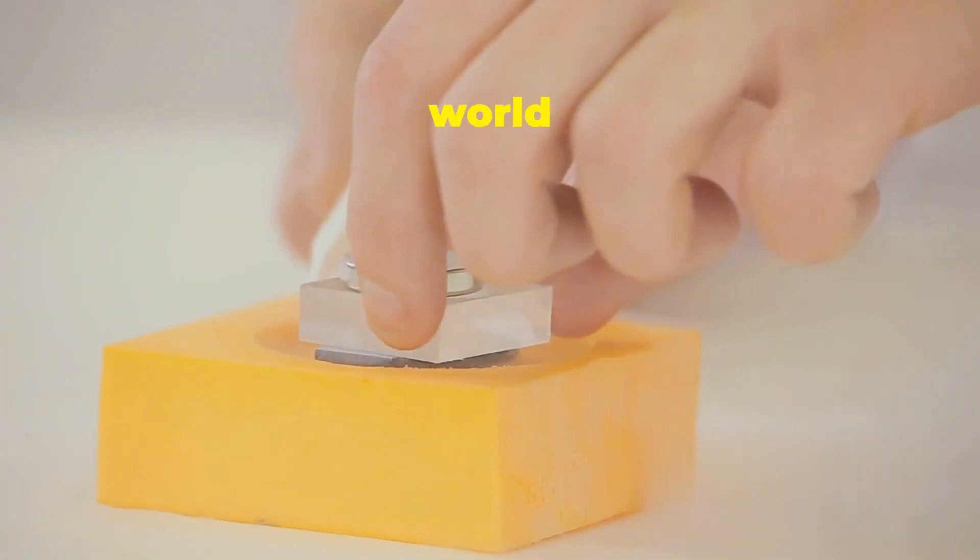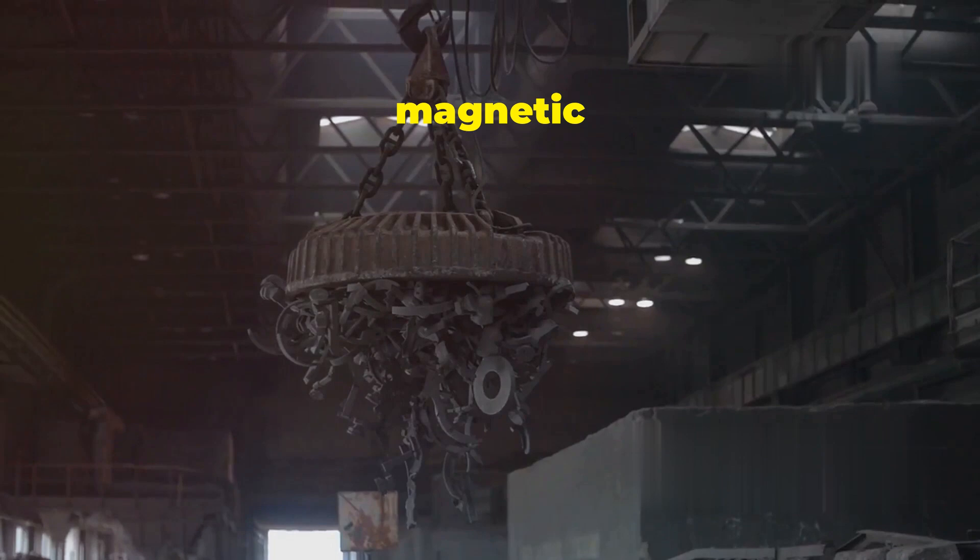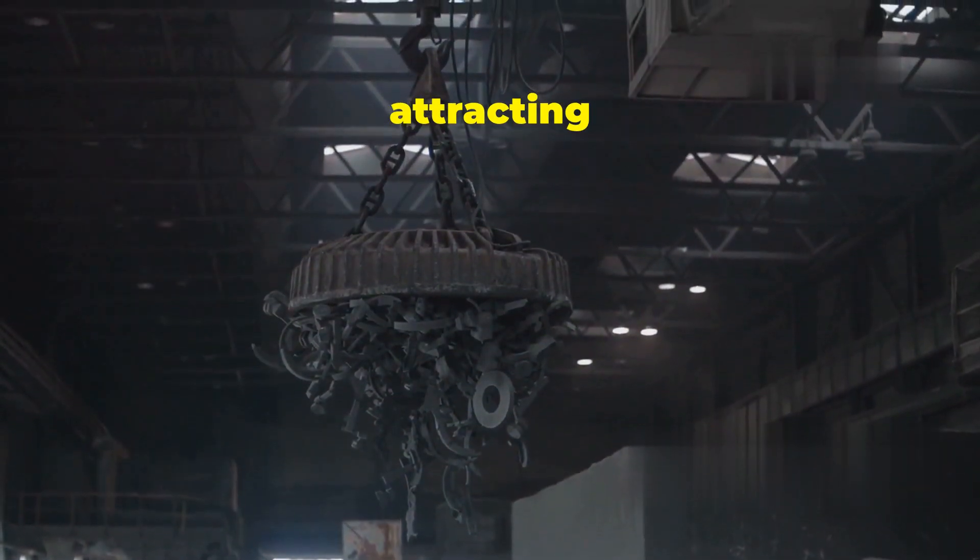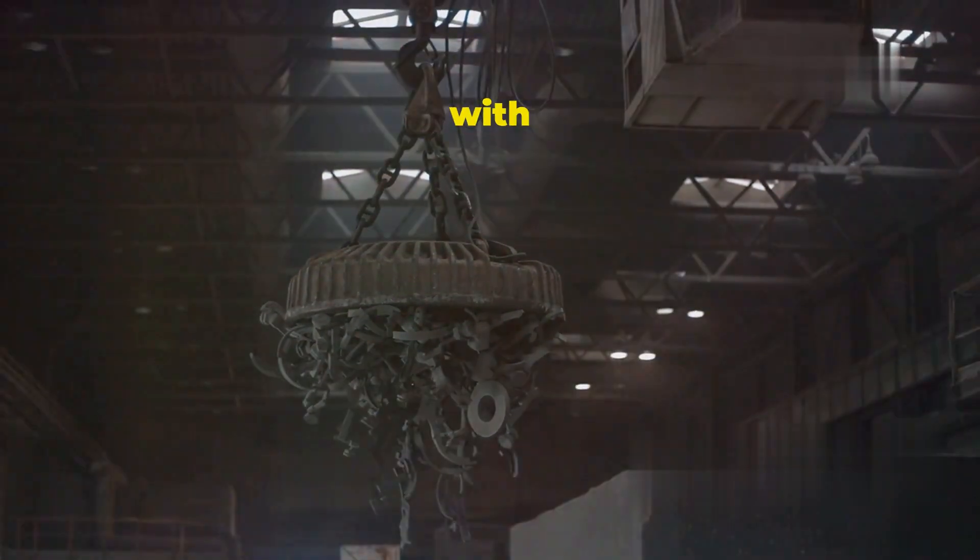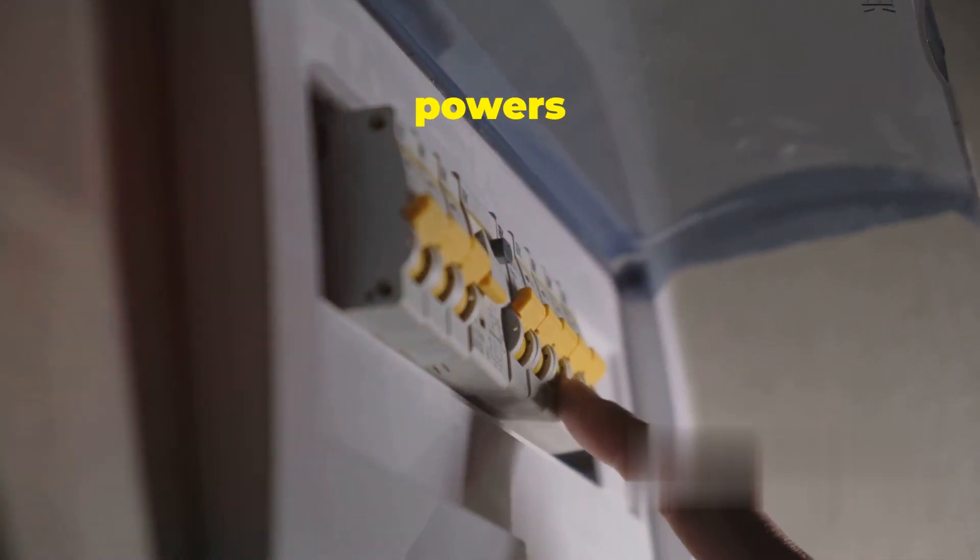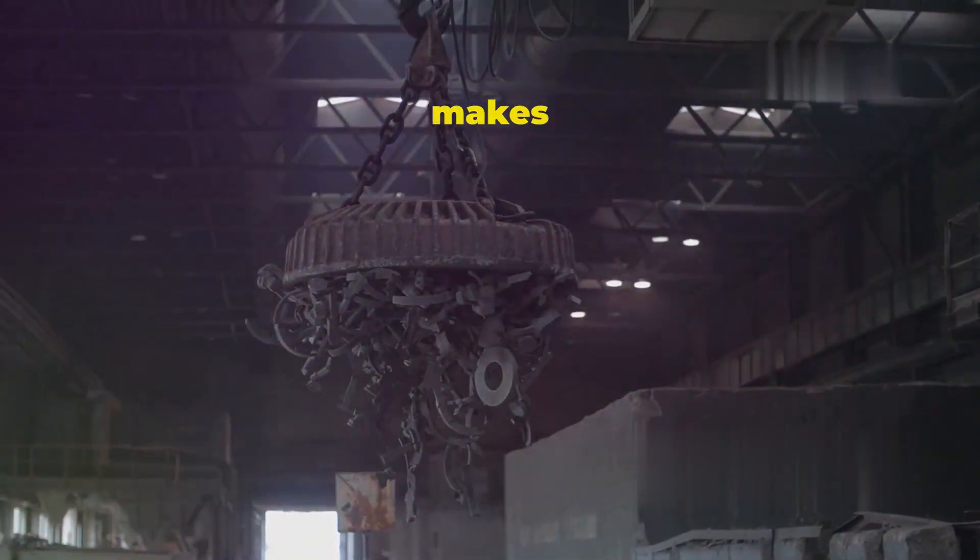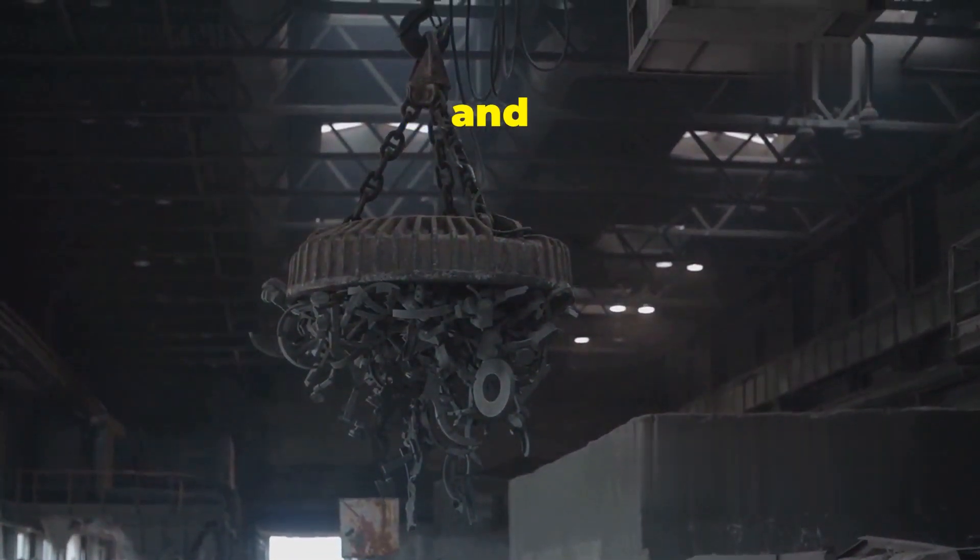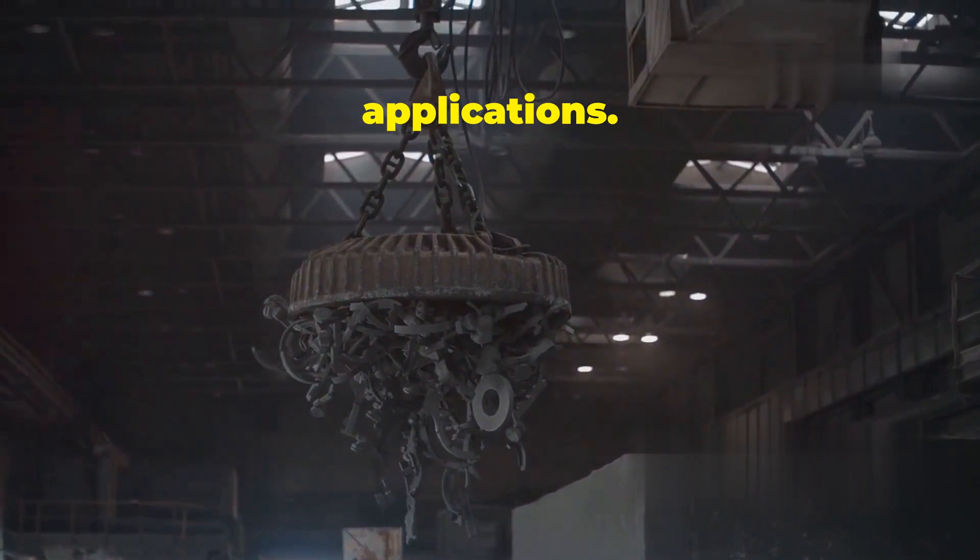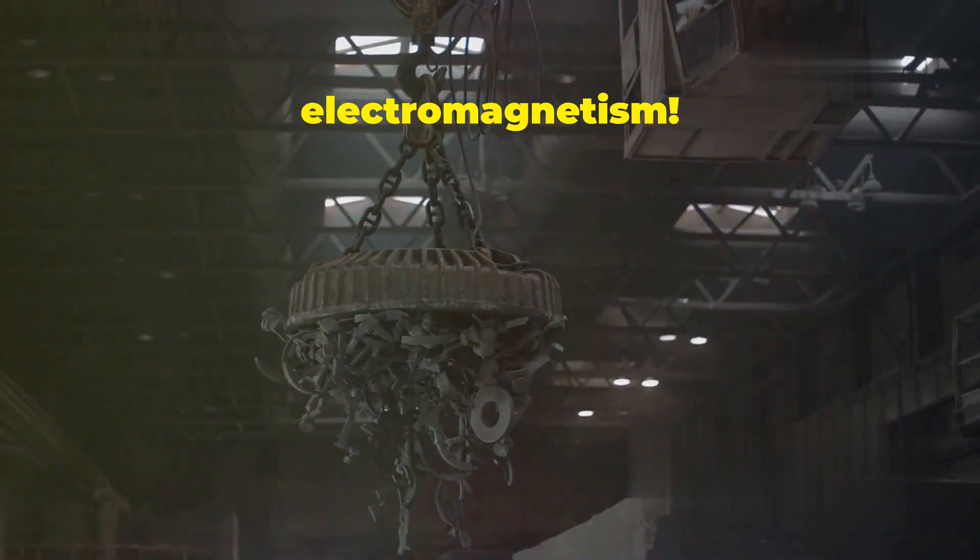Electromagnets are like superheroes in the world of physics. They possess the incredible ability to generate a magnetic field on demand, attracting or repelling ferrous objects with ease. But unlike their permanent magnet cousins, their magnetic powers are temporary and can be switched on or off at will. This remarkable property makes them incredibly versatile and useful in countless applications. So buckle up as we delve deeper into the fascinating world of electromagnetism.